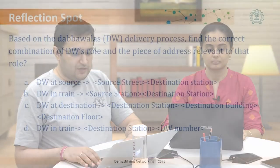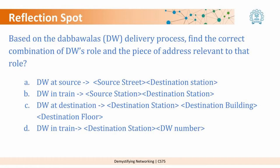Now that you have a summary of the Dabawala roles, it's a good time for a reflection question. You may pause the video, note your answer, and then continue watching. Based on the Dabawalas delivery process, find the correct combination of Dabawala roles and the piece of address relevant to that role. A: Dabawalas at source — source street and destination station. B: Dabawalas in train — source station and destination station. C: Dabawalas at destination — destination station, destination building, and destination floor. D: Dabawalas in train — destination station and Dabawala number.